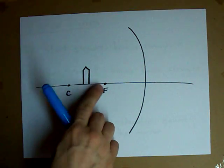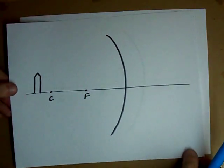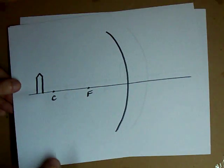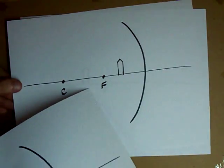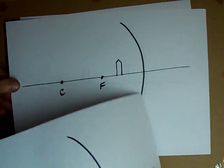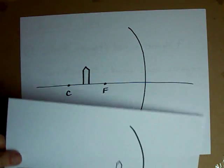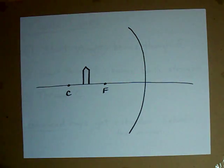One has the object between C and F, one has the object past C, and the other has the object closer to the mirror than F. Three different possibilities, and you're going to have to be able to predict where the image is for every single one of them.